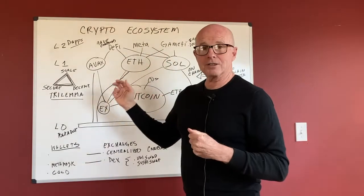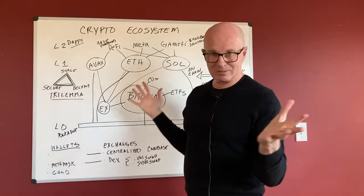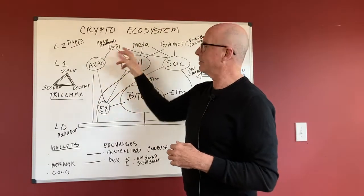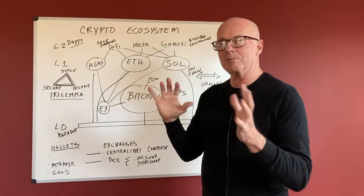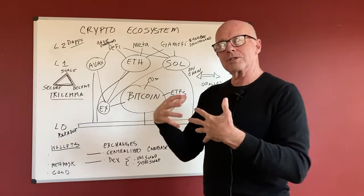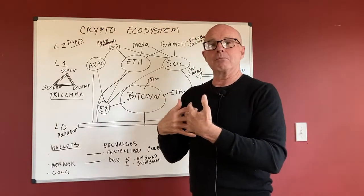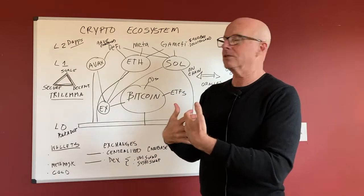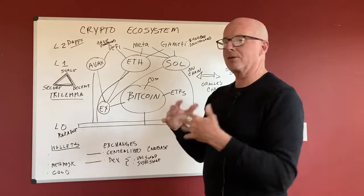Facebook just changed its name to Meta, trying to accommodate that. Square changed its name to Block blockchain, to try to become a DeFi, a decentralized finance to compete in that realm. All these companies, Microsoft, Google, they're all looking to these type of applications and how they're going to fit in.